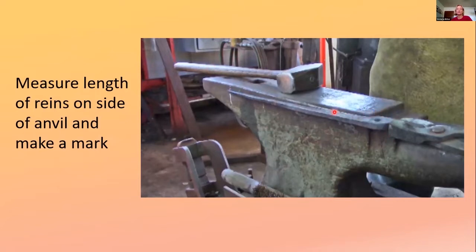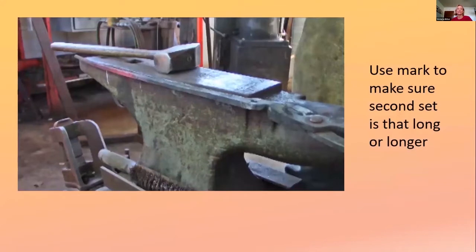One way to measure where you were is put the boss up against the table or the step of your anvil and make a mark on the far side of your anvil. And then as you taper your other side, you can use that as a measurement to see how you're doing.